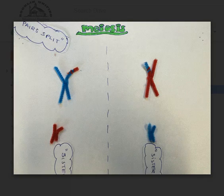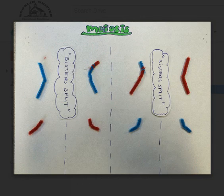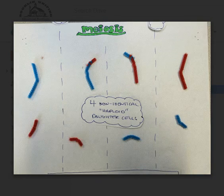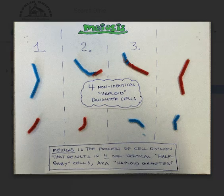When the pairs split, the crossing over results in the mixing of the genetic material from chromosome to chromosome. Then finally the sister chromatids split apart forming four non-identical haploid daughter cells. Meiosis is the process of cell division that results in four non-identical half baby cells, also known as haploid gametes.